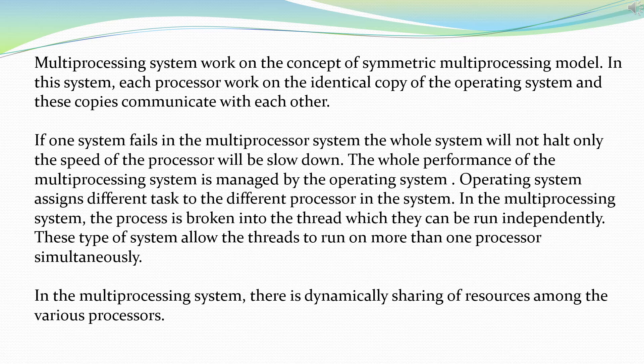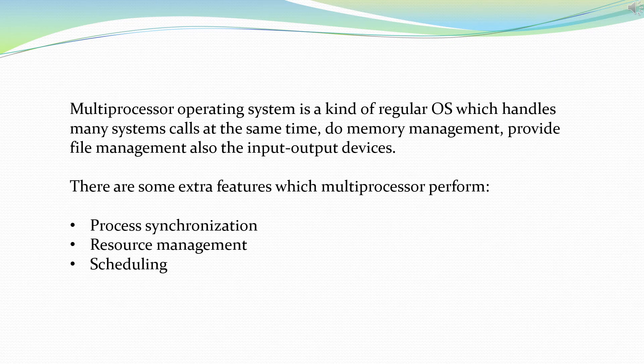Parallel processing is the ability of the CPU to run various processes simultaneously. In the multiprocessing system, there is dynamic sharing of resources among the various processors. A multiprocessor operating system is a kind of regular operating system which handles many system calls at the same time, does memory management, provides file management, and handles input/output devices. There are also extra features such as process synchronization, resource management, and scheduling.